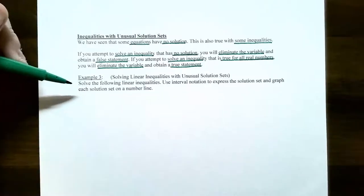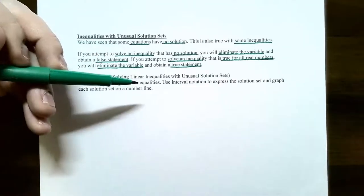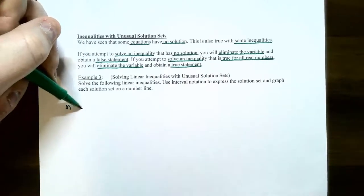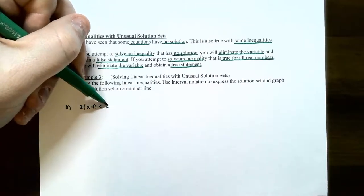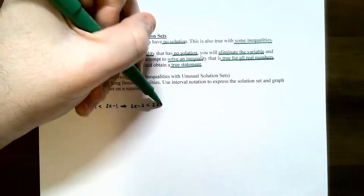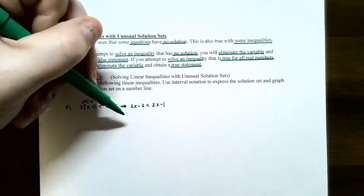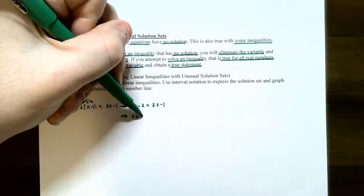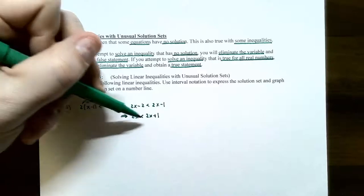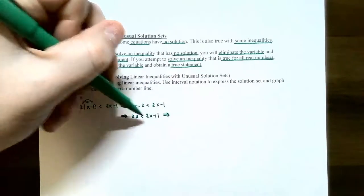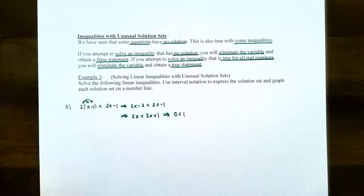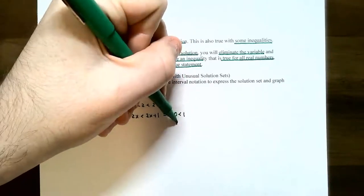Let's try example three: solve the following linear inequalities, use interval notation to express the solution set, and graph each solution set on a number line. Number one: solve 2 times the quantity (x minus 1) is less than 2x minus 1. Distribute the 2 through the parentheses: you have 2x minus 2 is less than 2x minus 1. Add 2 to get 2x is less than 2x plus 1. Subtract 2x from both sides and you get 0 is less than 1. It doesn't mean there's no solution — you have to check whether the statement is true or false. Well, 0 is less than 1: this is a true statement for all real numbers.